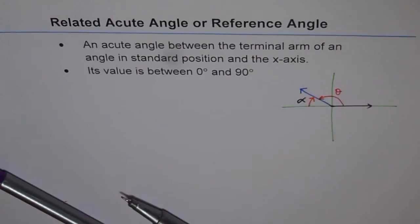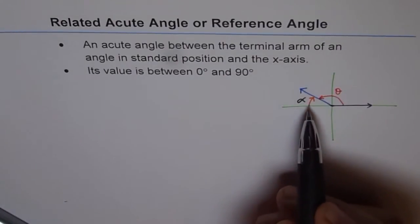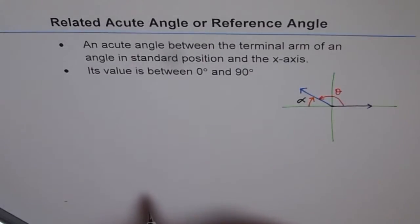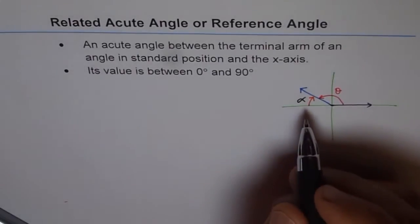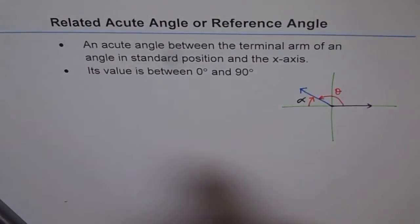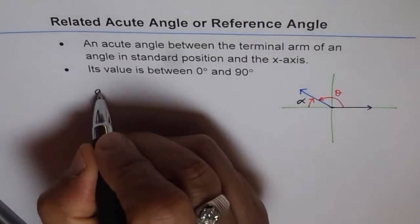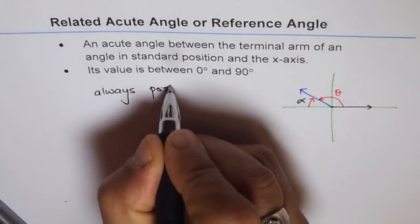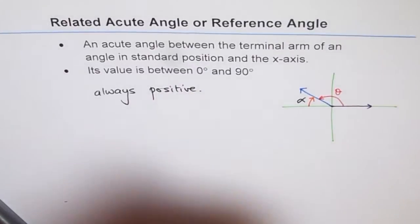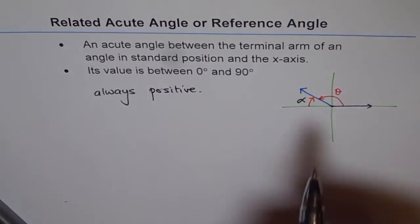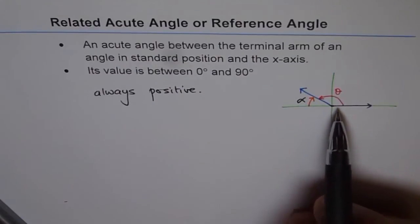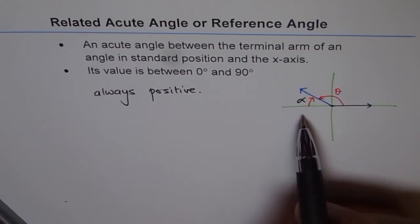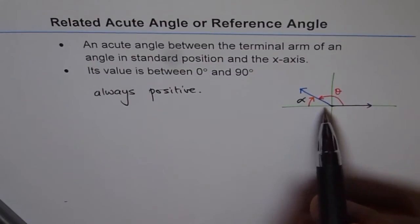Related acute angle — remember, it is an acute angle, so it has to be between 0 and 90 degrees. Second, we will always treat the related acute angle as positive. In trigonometry, we have many applications where the angle theta and the related acute angle alpha are required to solve problems.